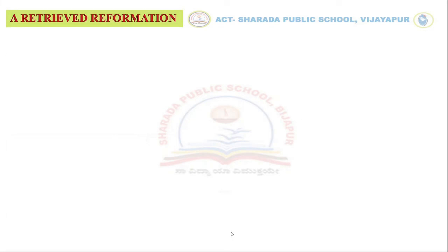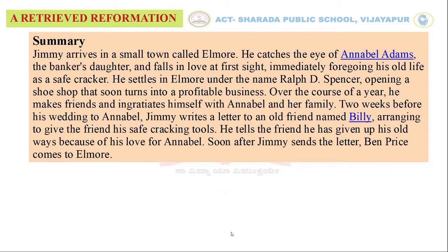Now let us look at the summary of this lesson. Jimmy arrives in a small town called Elmo. He catches the eye of Annabelle Adams, the banker's daughter, and falls in love at first sight, immediately foregoing his old life as a safe cracker. He settles in Elmo under the name of Ralph Spencer, opening a shoe shop that soon turns into a profitable business.